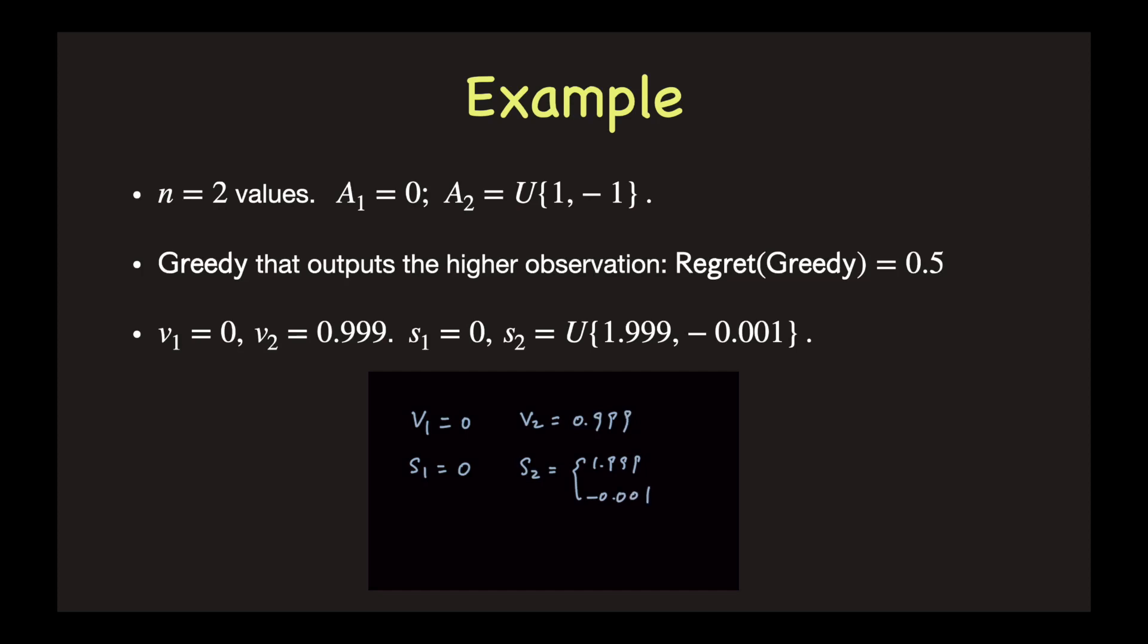Therefore, the greedy algorithm will select s1 with probability half, because s1 is larger than s2 with probability half. Therefore, the regret of the greedy algorithm is at least half times the difference between v2 and v1, which is about half.